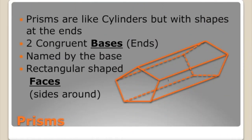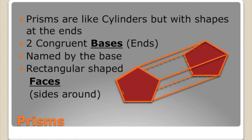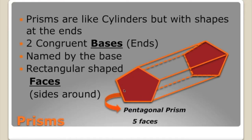How would we name this shape? Remember that we name it by the base. Since the base here is a pentagon — one, two, three, four, five sides — we call this a pentagonal prism because the base is a pentagon. And remember, it's easy to tell how many faces a prism has because of the number of sides the base has. Since this base has five sides, we're going to have five faces.